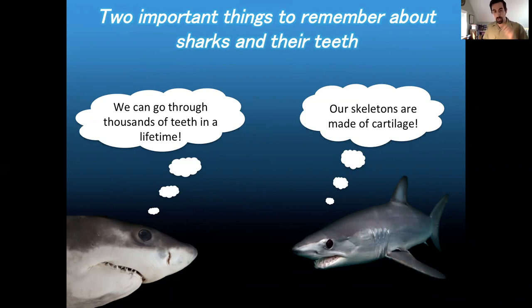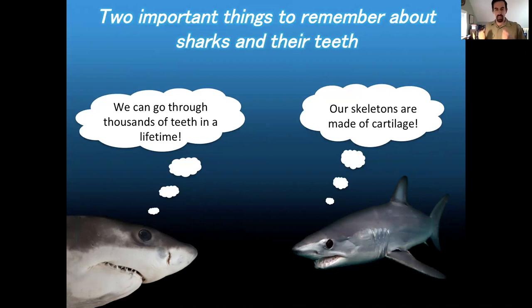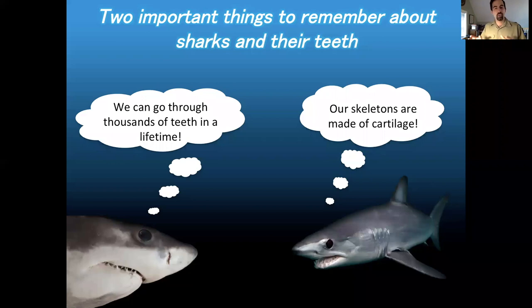Another important thing: sharks have skeletons made of cartilage. Cartilage is a special kind of tissue — not as thick or heavily mineralized or hard as bone. You have some cartilage in you right now; if you reach up and wiggle the tip of your nose, it wiggles because it has cartilage in it. We have a special word for fish with skeletons made of cartilage: chondrichthyes. Chondro means cartilage, and ichthyes — like ichthyology — means fish. So chondrichthyes are cartilaginous fishes.